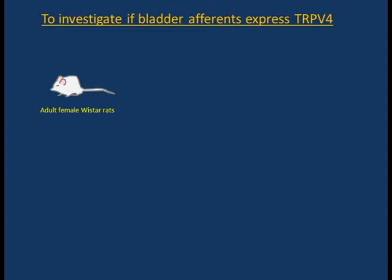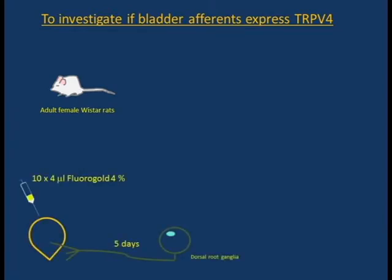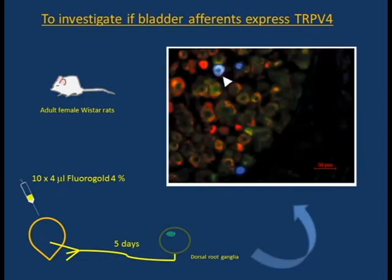However, using a retrograde neuronal tracer injected in the bladder wall, we found that TRPV4 is present in the bladder primary afferents.